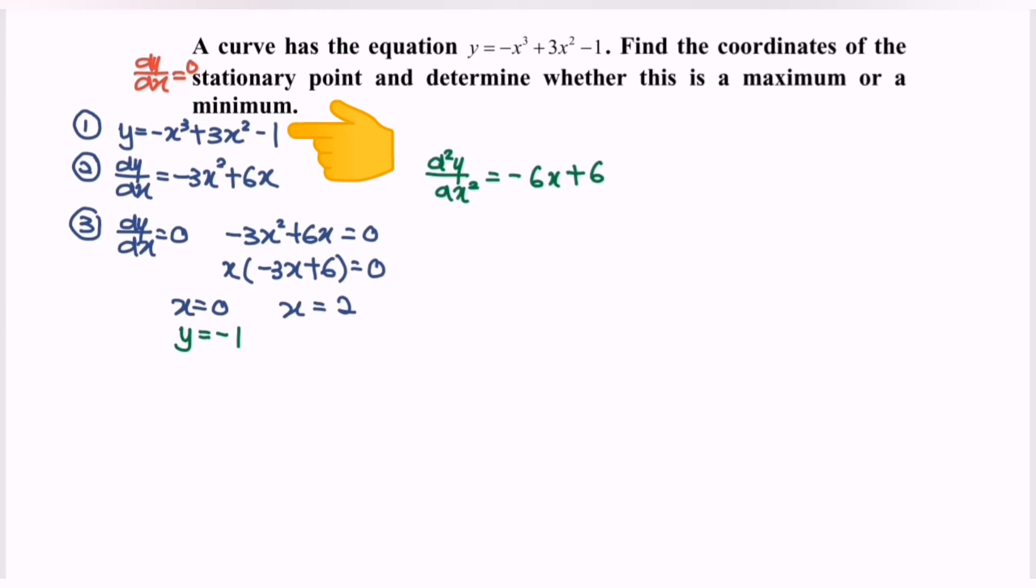If we substitute the value x = 2, the value of y will be equal to 3. So we will have the critical point or the stationary point (0, -1) and (2, 3).